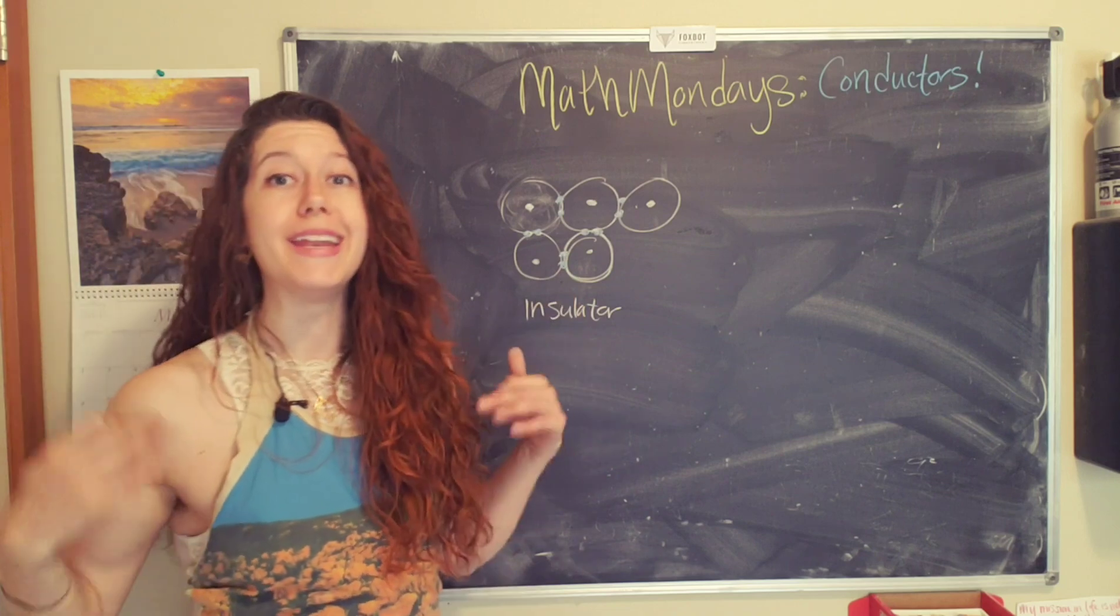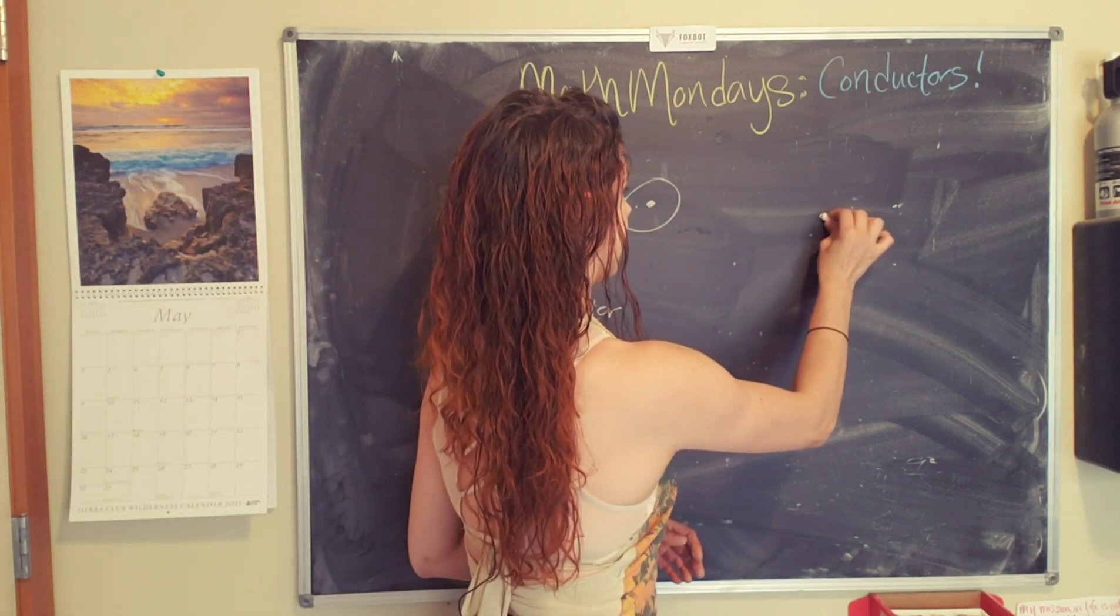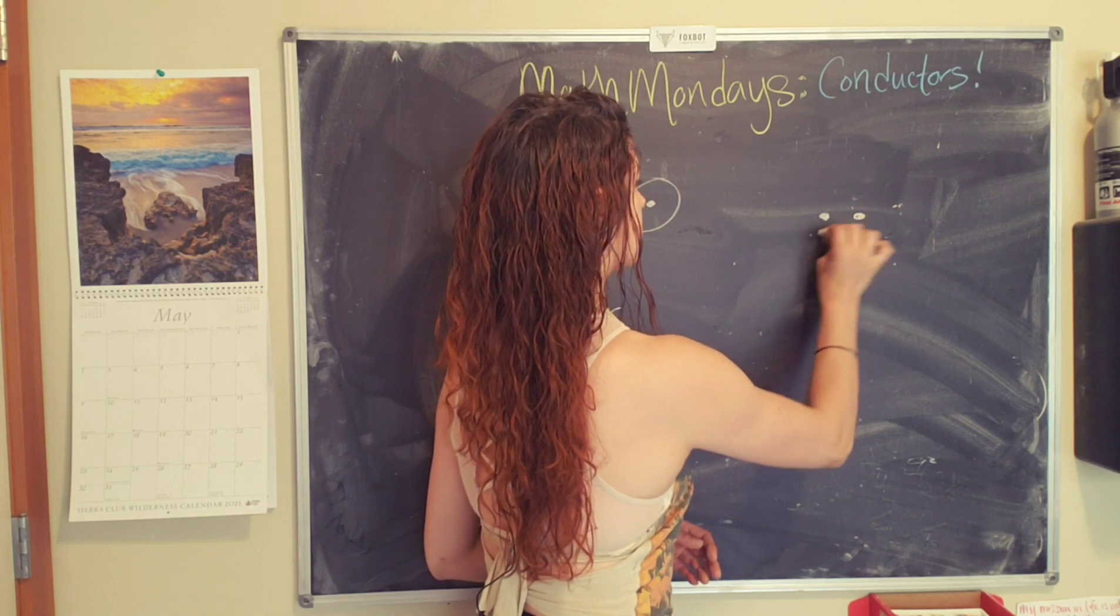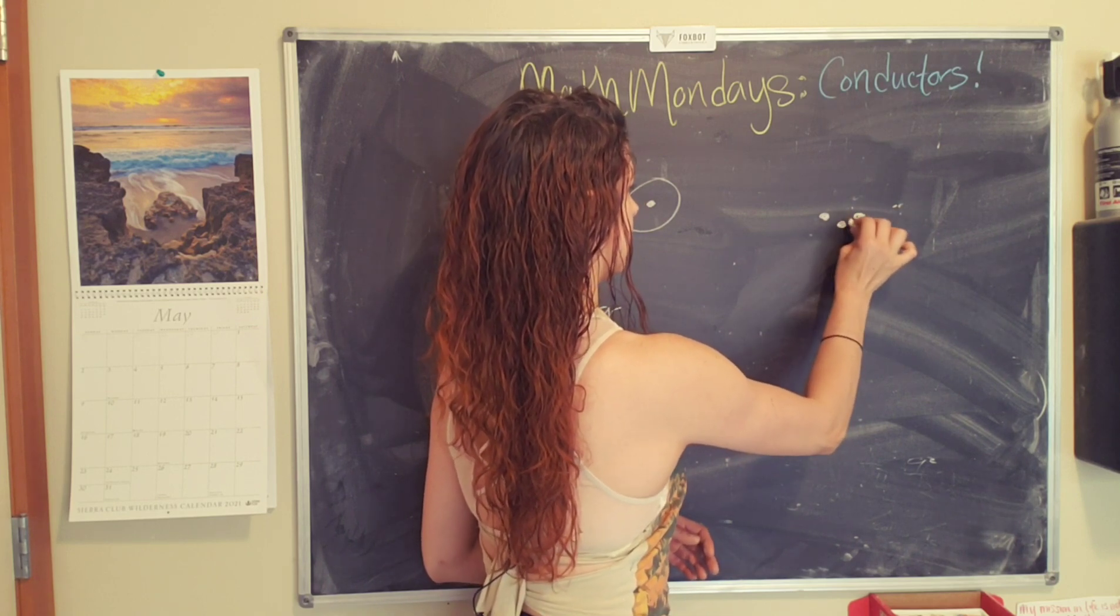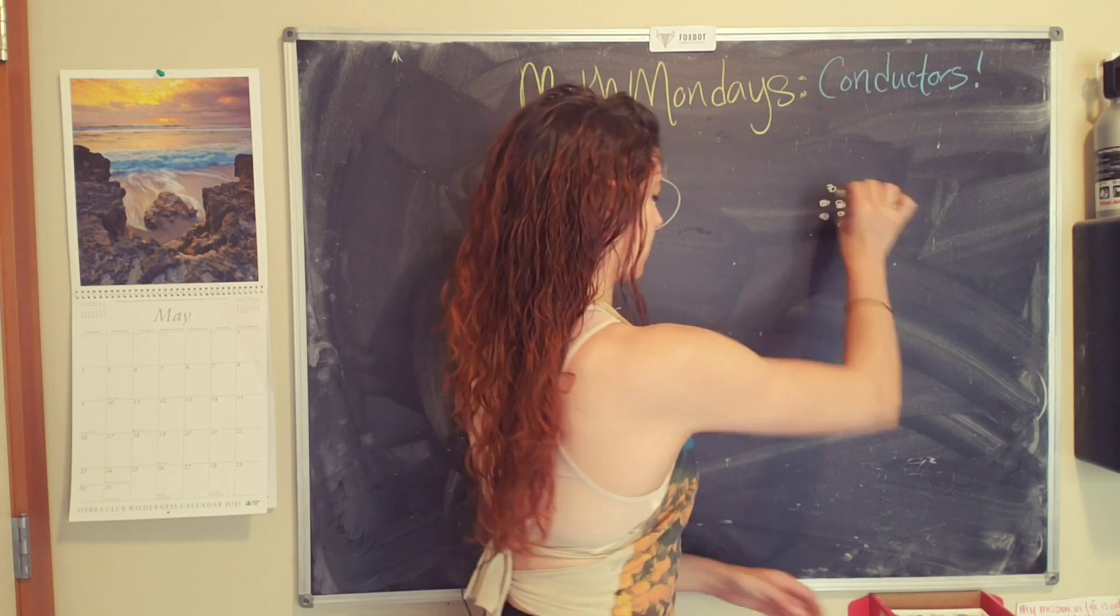And electrons are negatively charged in a conductor. What you have is the nuclei are kind of, well, this is going to be a little bit harder to draw. So bear with me. And this is kind of just a little representation.